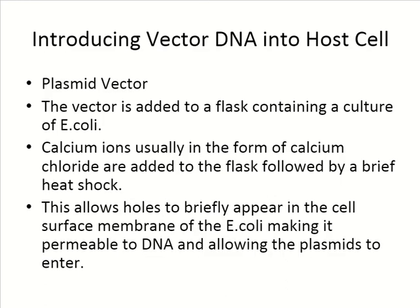To introduce the vector DNA into a host cell, a plasmid vector is used to introduce the recombinant DNA into a host before it contacts the host's DNA. The vector is added to a flask containing a culture of E. coli. Calcium ions, usually in the form of calcium chloride, are added to the flask followed by a brief heat shock. This perturbs the bacteria, allowing holes to form in the surface of their plasma membrane through which the vector can enter the E. coli.